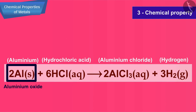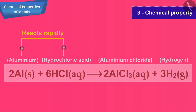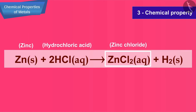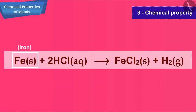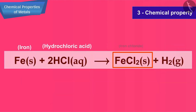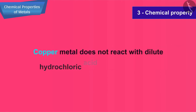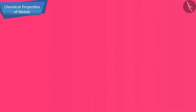Aluminium metal reacts slowly with dilute hydrochloric acid due to the presence of a tough protective layer of aluminium oxide on its surface. But when the thin outer oxide layer gets dissolved in acid, then fresh metal is exposed and reacts rapidly with dilute hydrochloric acid. Zinc also reacts with dilute acid to give zinc chloride and hydrogen gas, but the reaction is less rapid than that of aluminium. Iron reacts with dilute acid to give iron chloride and hydrogen gas. Copper metal does not react with dilute hydrochloric acid or sulfuric acid, and this shows that copper is least reactive.